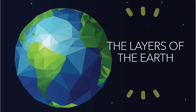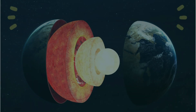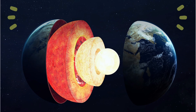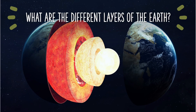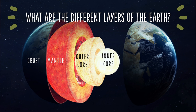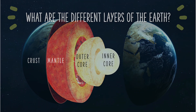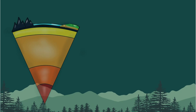The layers of the Earth. The different layers of the Earth are the crust, mantle, outer core, and inner core. Let us describe each layer.